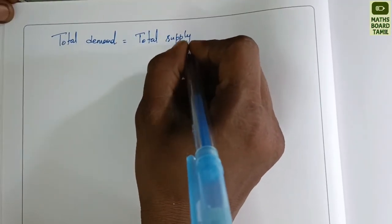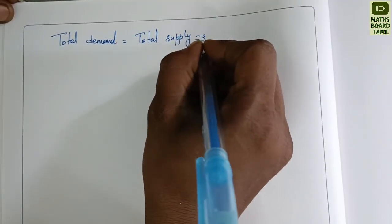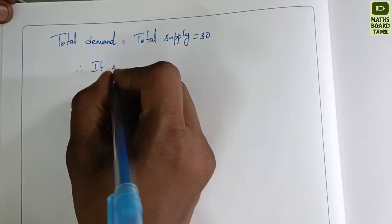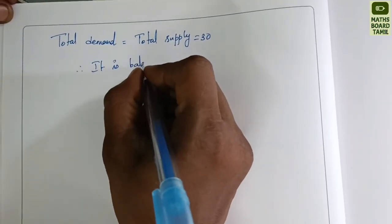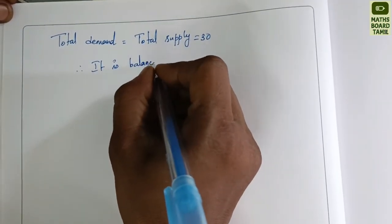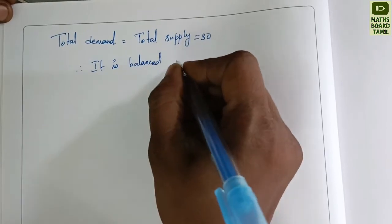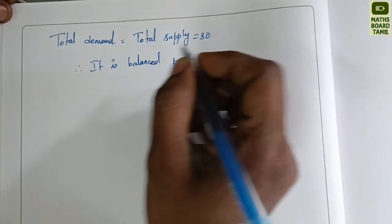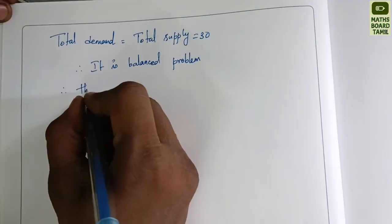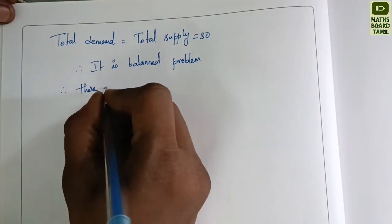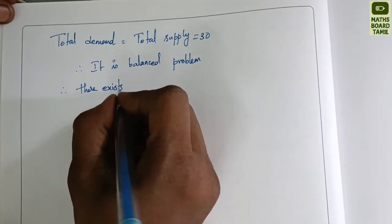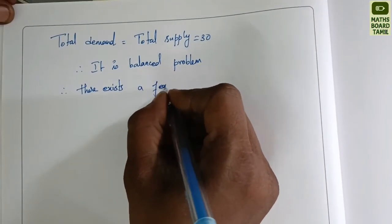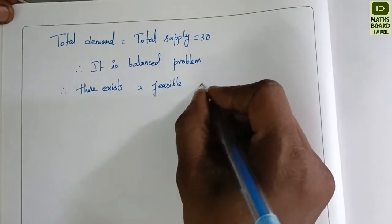Since the total supply equals the total demand, it is a balanced transportation problem. Therefore, a feasible solution exists.